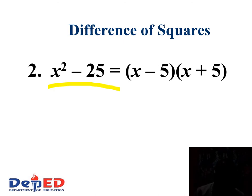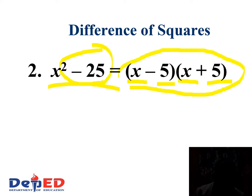Let us have another example: x² minus 25. The square root of x² is x, so x is the first term. And then the square root of 25 is 5, so we have negative and positive 5. We can interchange the sign.